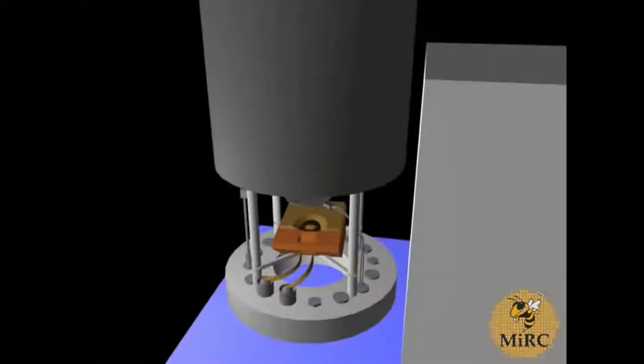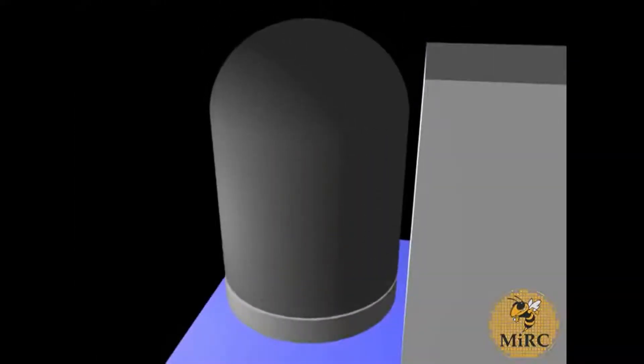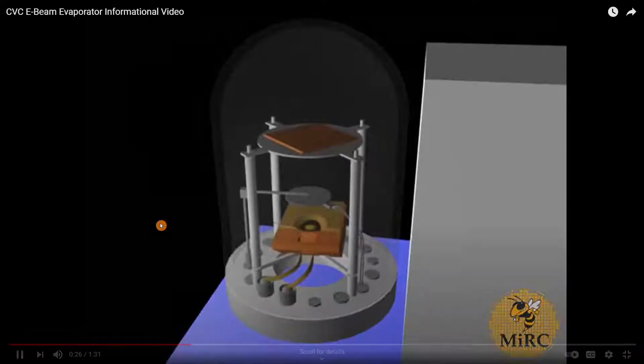Once a sample has been loaded, the chamber will be closed. The chamber is then pumped down. Here it shows how the e-beam works. Over here you have a crucible holding the source material.